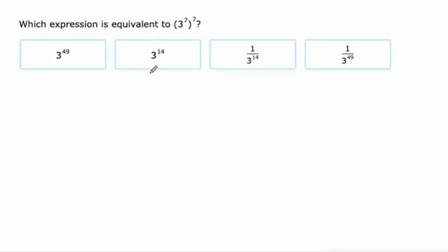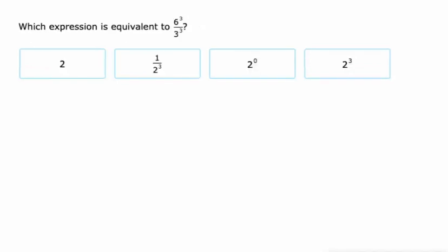And when you're doing a power to another power, we multiply these powers. So 7 times 7 is 49. Like I said, pretty basic start there.